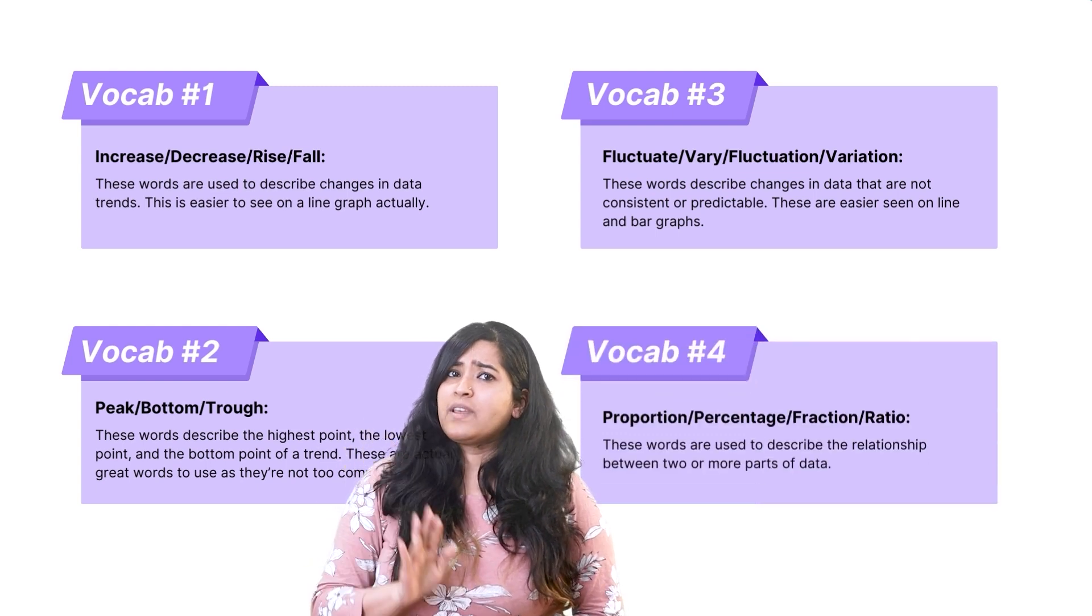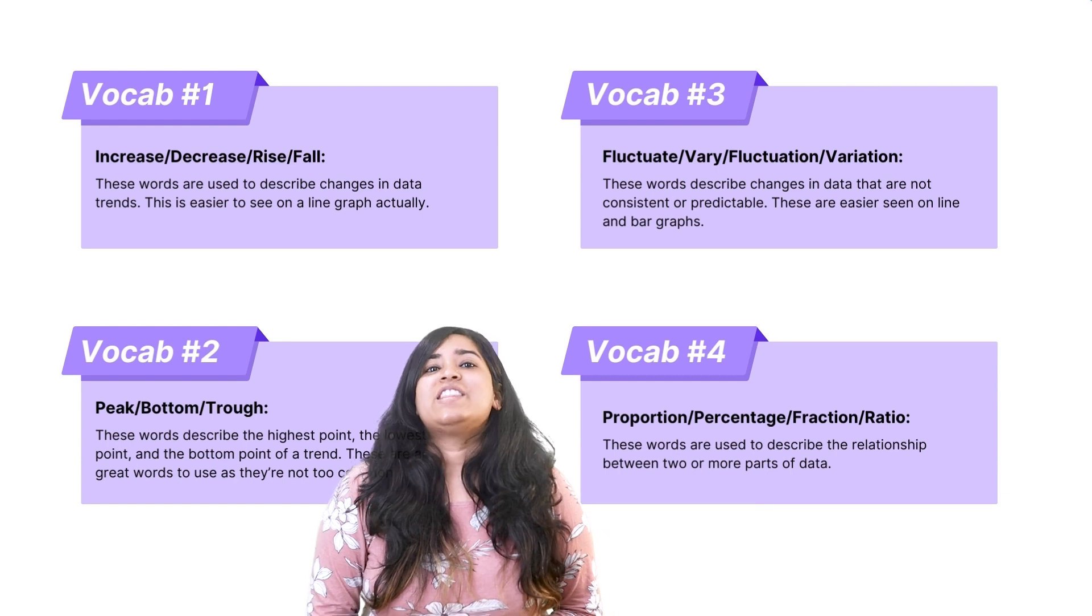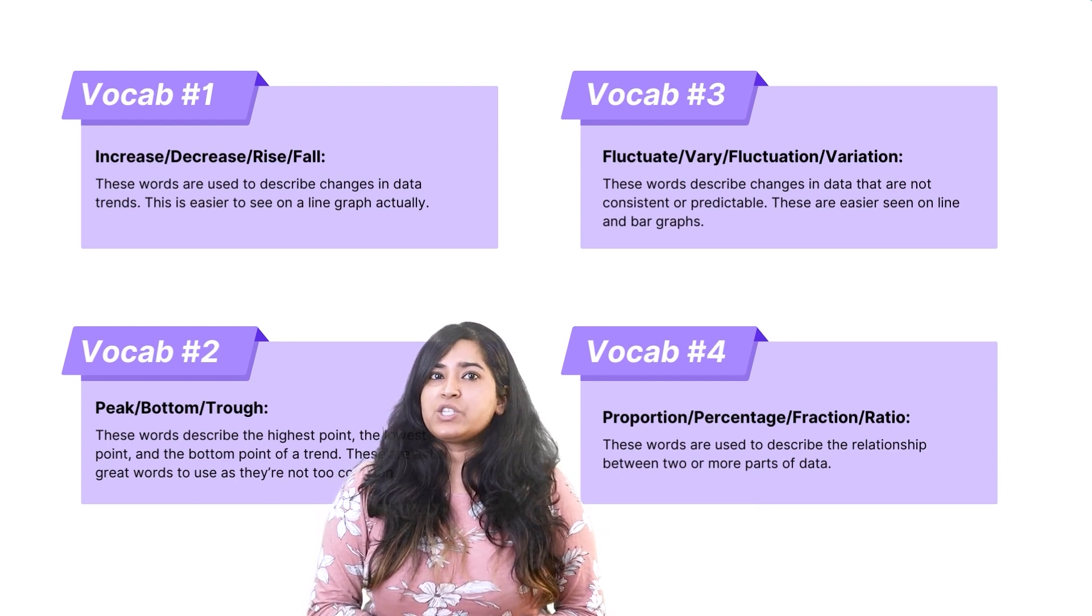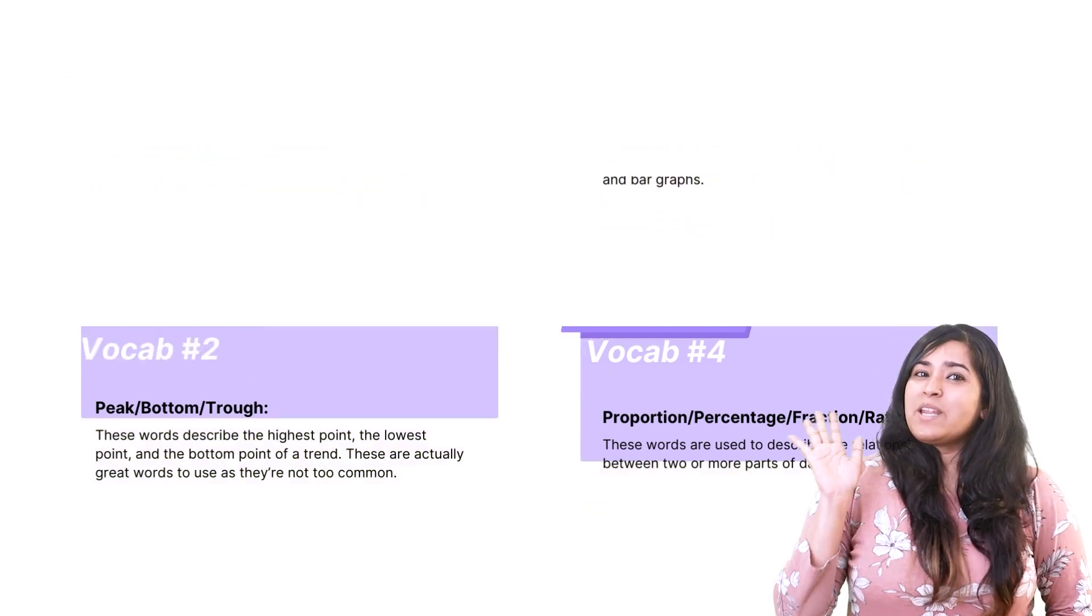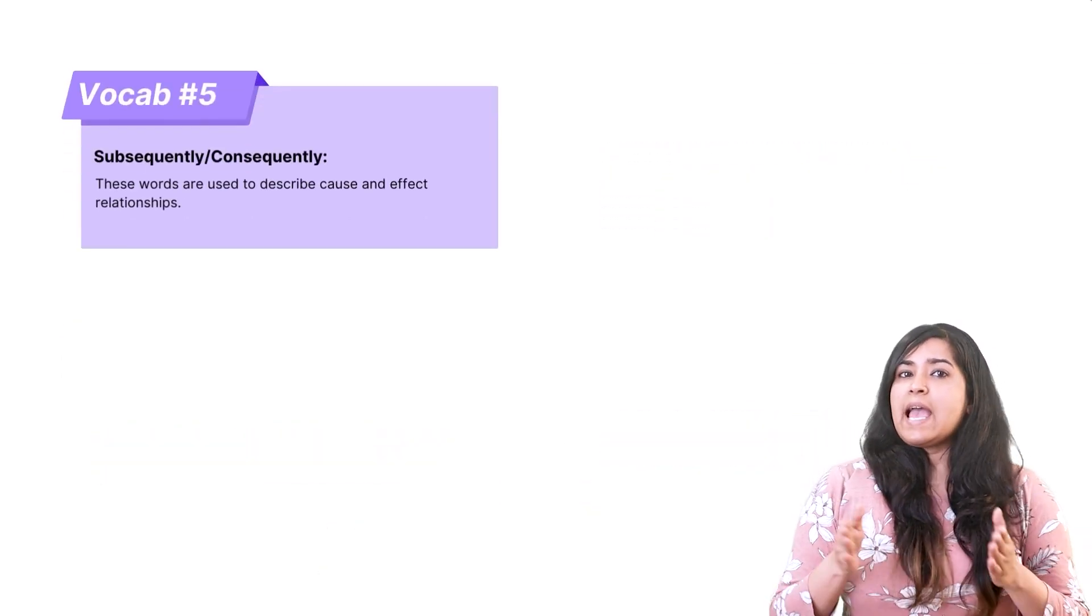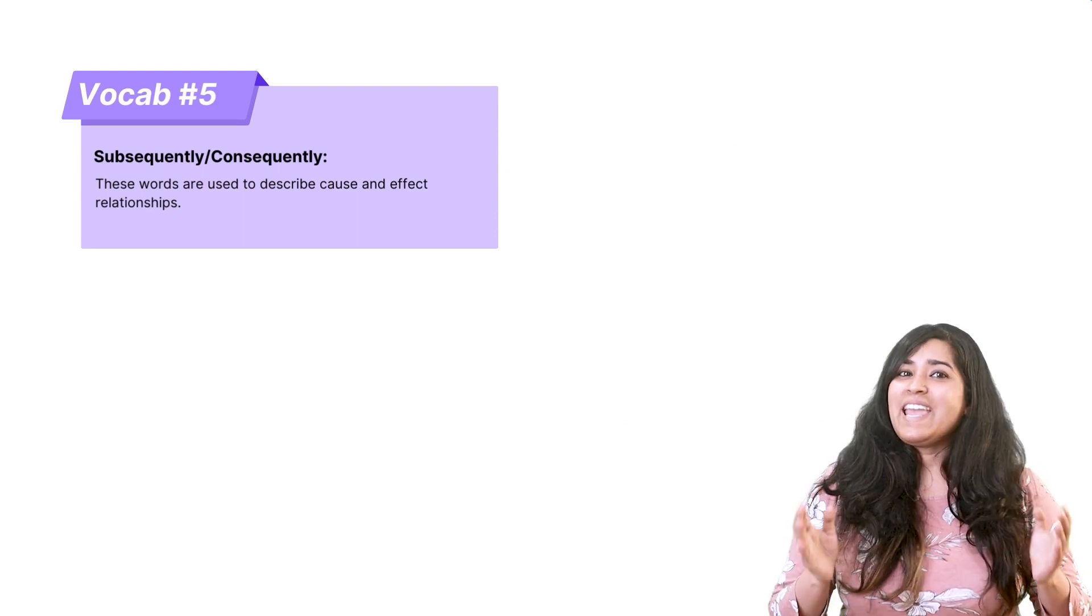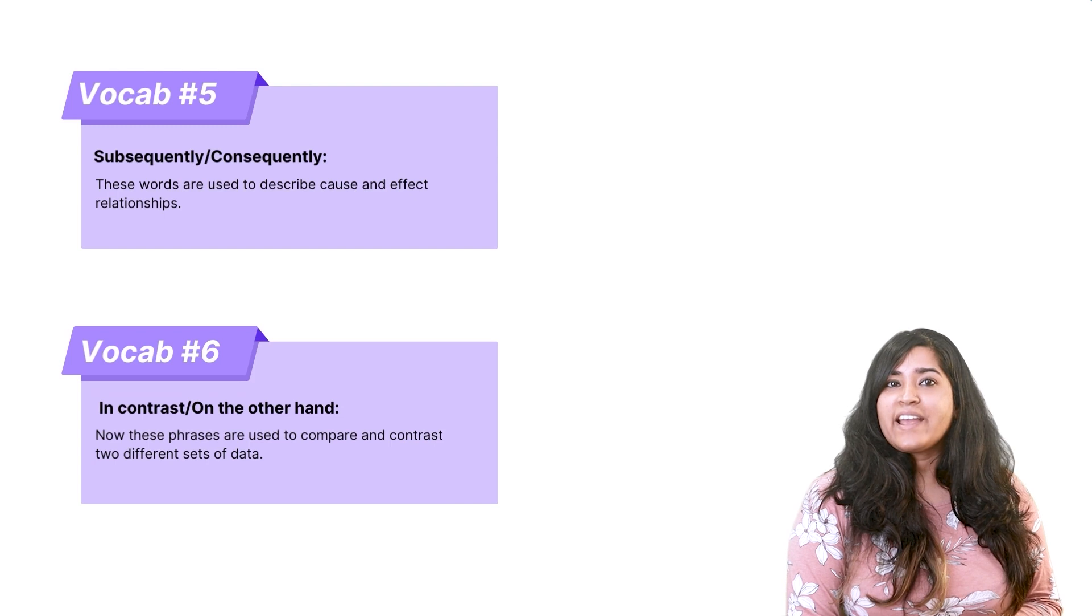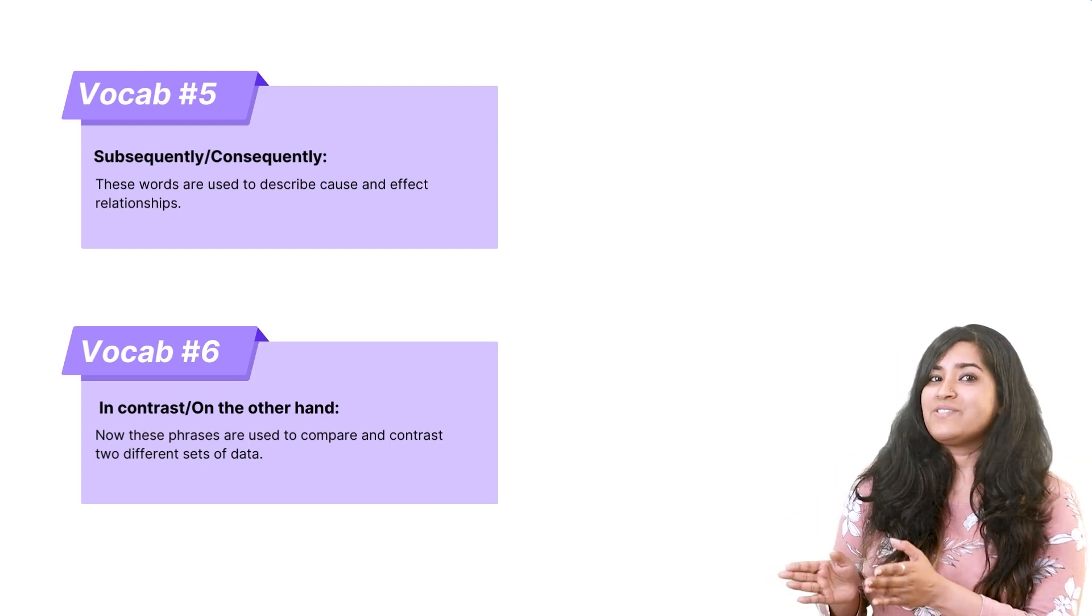Useful vocab number four: proportion, percentage, fraction, and ratio. These words are used to describe the relationship between two or more parts of data. Useful vocab number five: subsequently and or consequently. These words are used to describe cause and effect relationships. In contrast and or on the other hand. Now these phrases are used to compare and contrast two different sets of data.